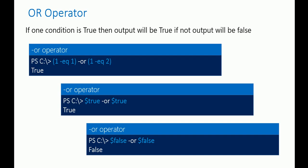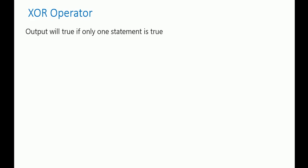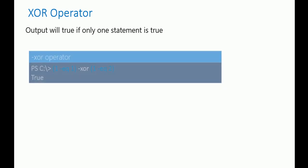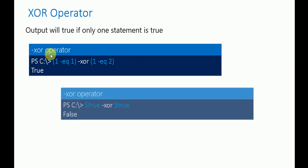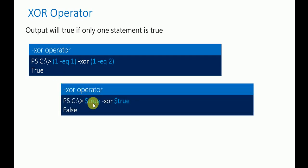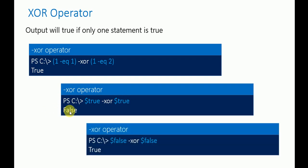If the first statement is false and the other is also false, then the overall output is false. Now let's understand the XOR operator. The output will be true only if one statement is true. If both statements are true, then the overall output will be false. For example: first statement true, second false — output is true. But if first is true and second is also true, output will be false. If both are false, output will also be false.